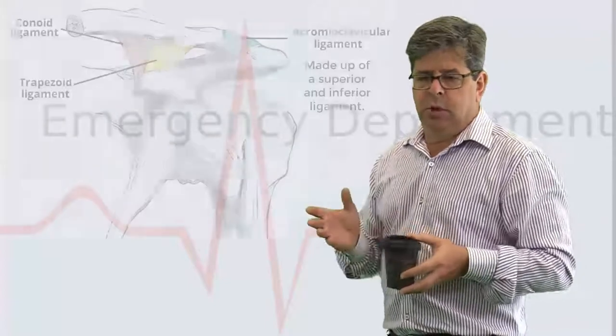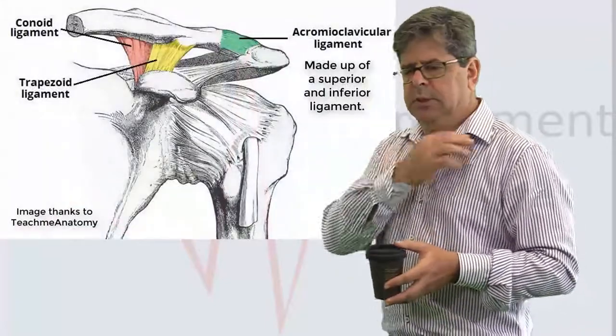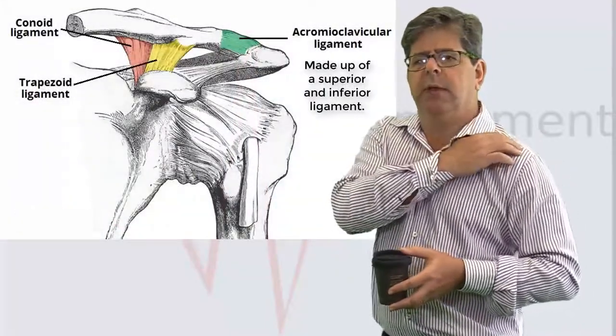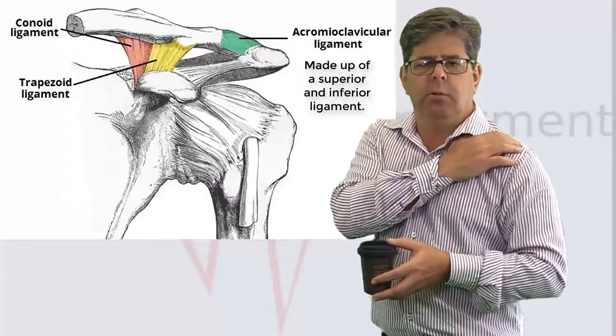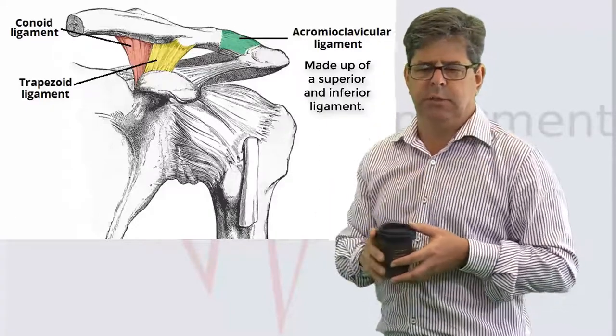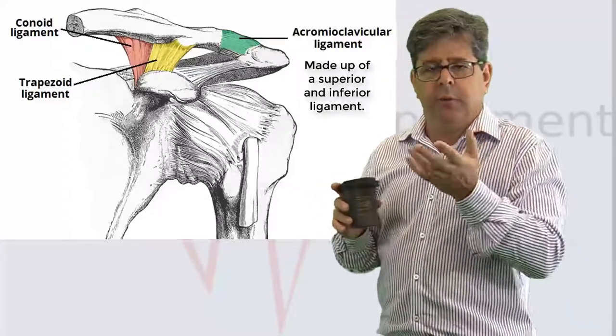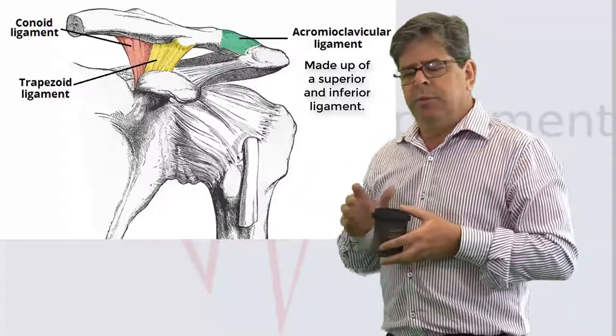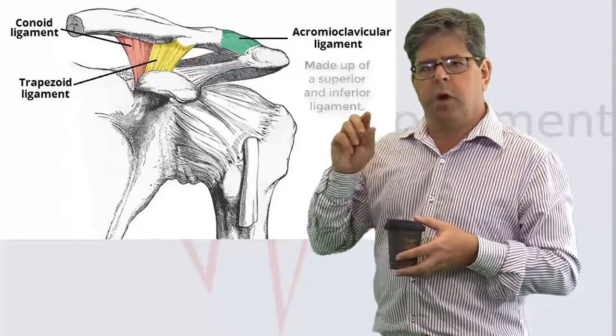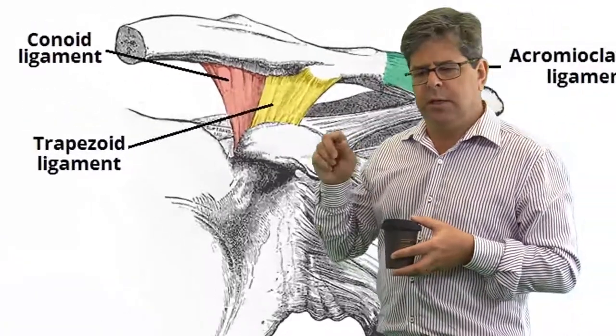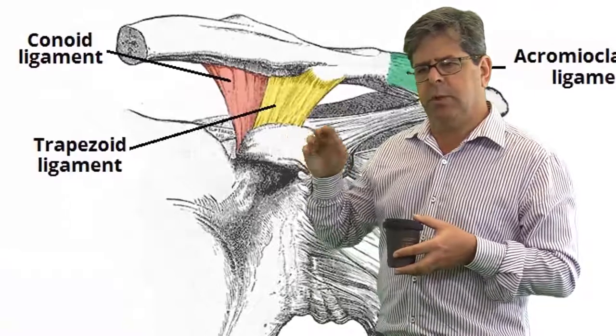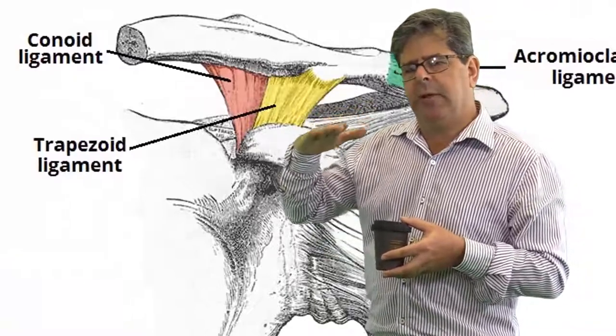So what's the acromioclavicular joint? Well, it's the joint between the distal part of the clavicle and the acromion of the scapula. It's a small synovial joint and superiorly it's got the superior ligament and inferiorly the inferior ligament. It's also important to remember the coracoclavicular ligament, that is the conoid and the trapezoid ligament that holds down that clavicle.